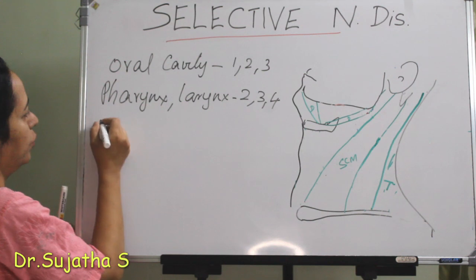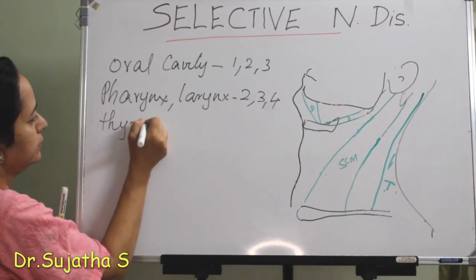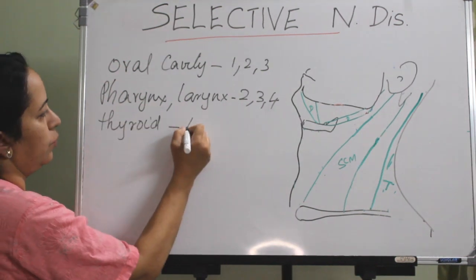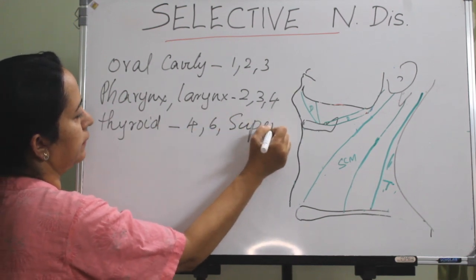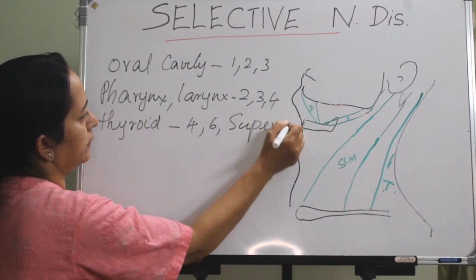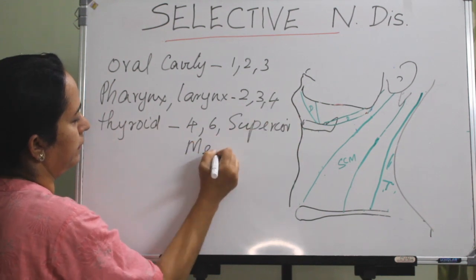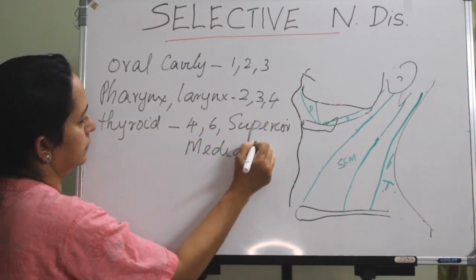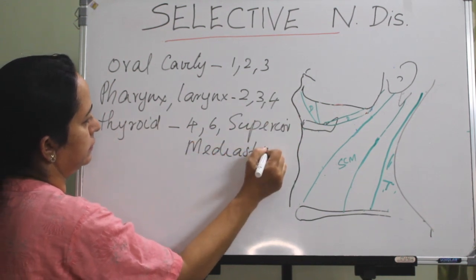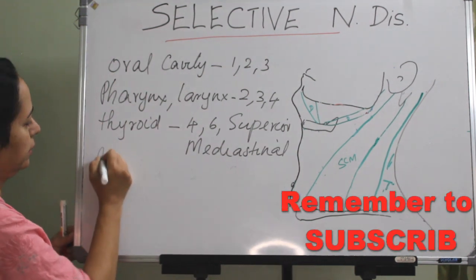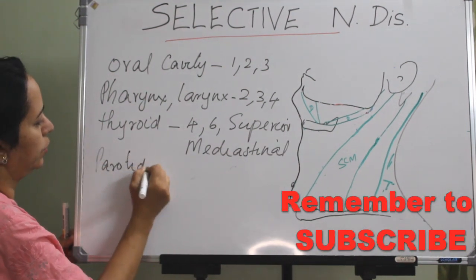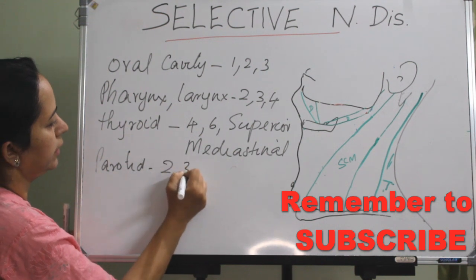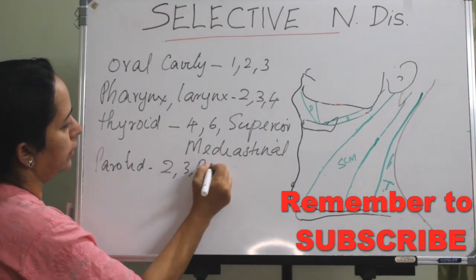From thyroid, the nodes involved are levels 4, 6, and superior mediastinal. For parotid, the usually involved nodes are levels 2, 3, and pre-auricular.